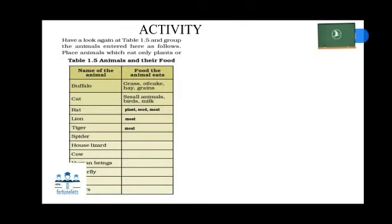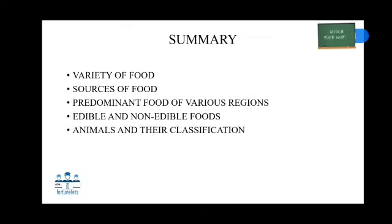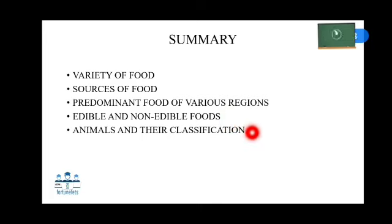This activity should be done in your textbook — Table 1.5: Animals and their food. Some animal names are given; based on the activity we have done previously, you have to enter the food they eat. So far you have learnt about variety of food, sources of food, predominant food of various regions, edible and non-edible food, and animals and their classifications. This is all about the lesson. Until we meet in the next class, stay home, stay safe, and happy learning.